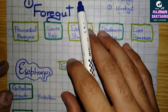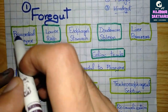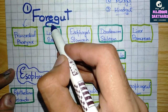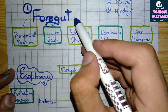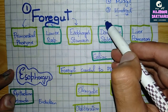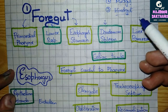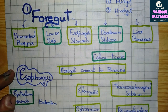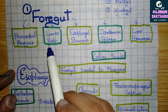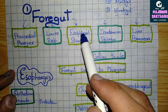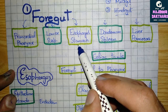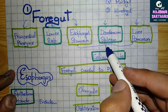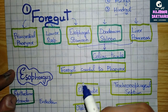The foregut derivatives include the primordial pharynx, the lower respiratory tract, esophagus, stomach, duodenum, spleen, and the liver and pancreas. With the exception of the primordial pharynx and the lower respiratory tract, all the other derivatives of the foregut are supplied by the celiac trunk.